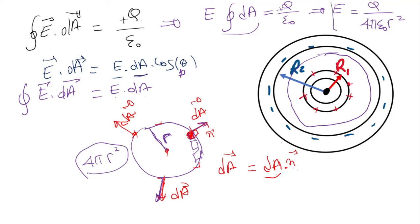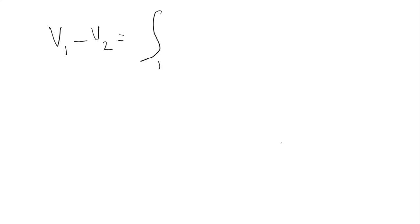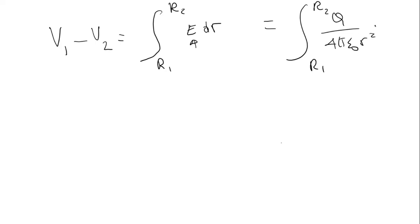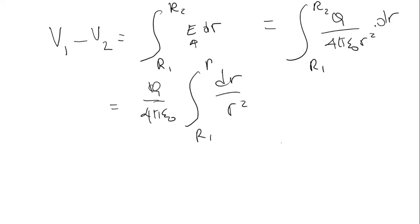Now we calculate the electric potential difference between R1 and R2, which is the integral from R1 to R2 of E dr. Substituting E = Q over 4πε₀r², this becomes Q over 4πε₀ times the integral from R1 to R2 of dr over r². The constant Q over 4πε₀ goes outside the integral. The integral of dr over r squared is negative 1 over r.